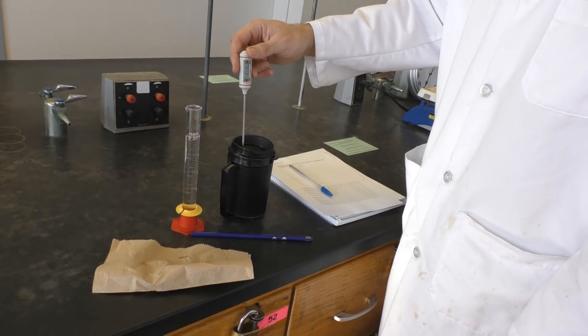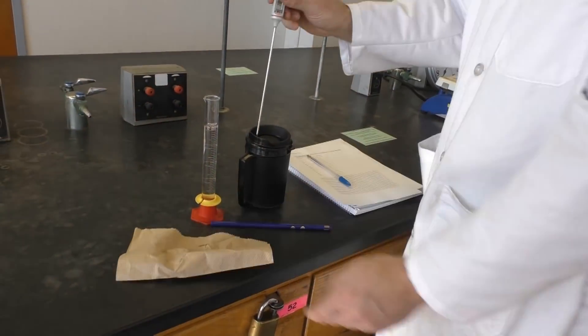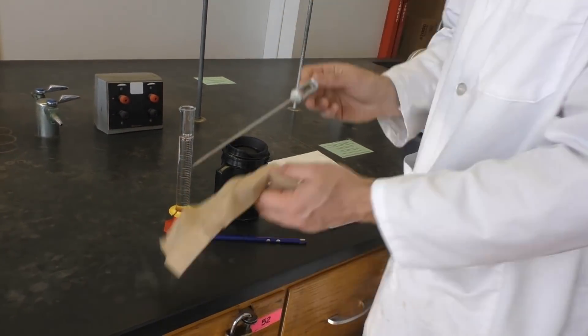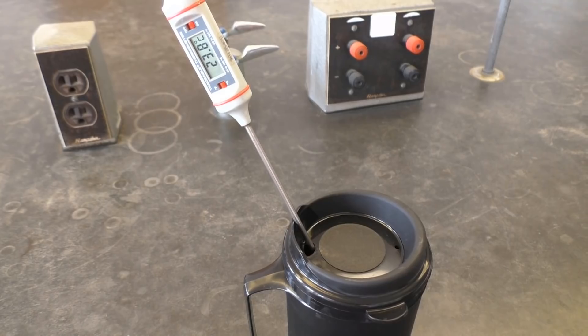Next, you need to get your acid and base to the same temperature. Just be patient and be sure to wipe off your thermometer between solutions. Once your solutions are at the same temperature, write it down as your time zero temperature.